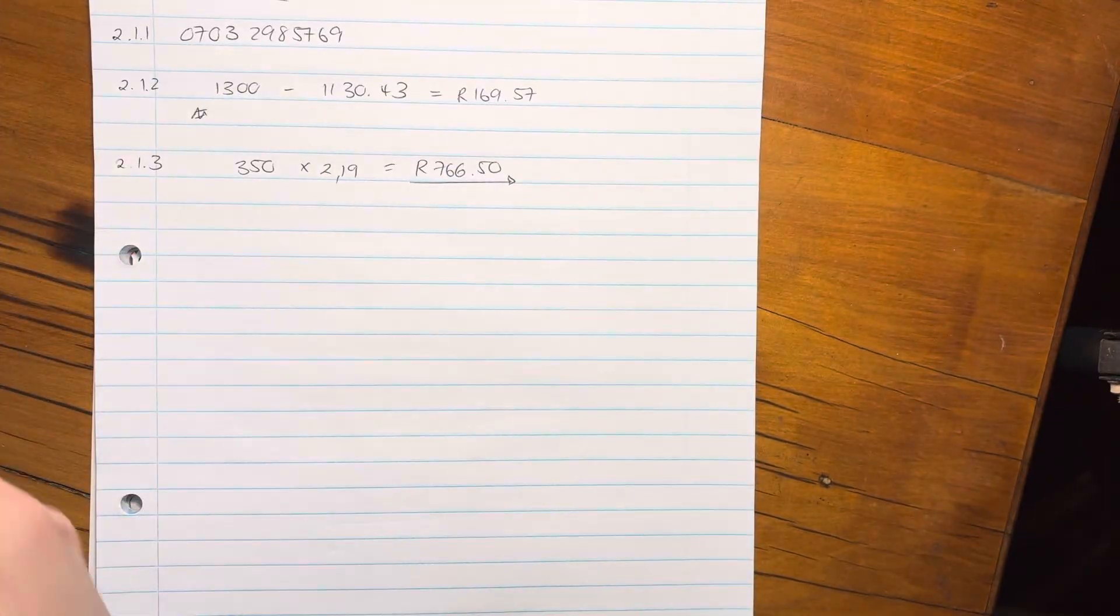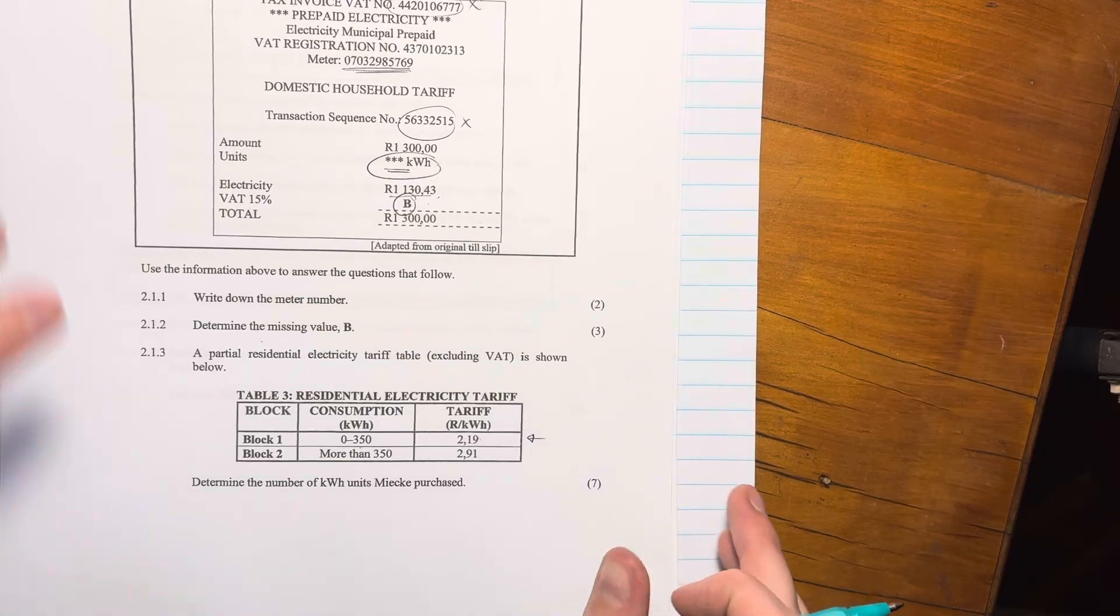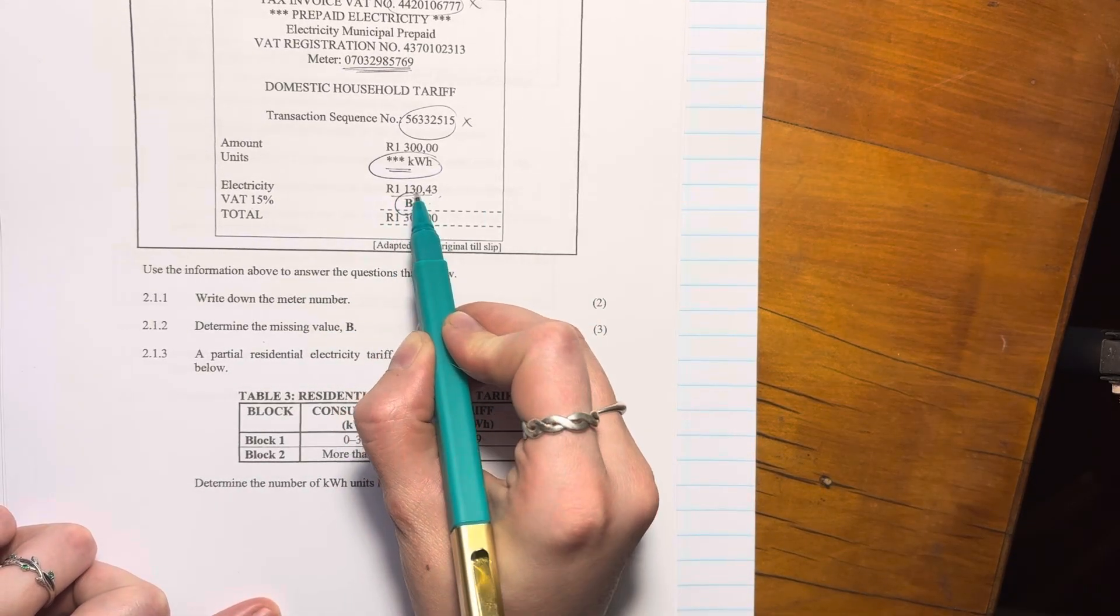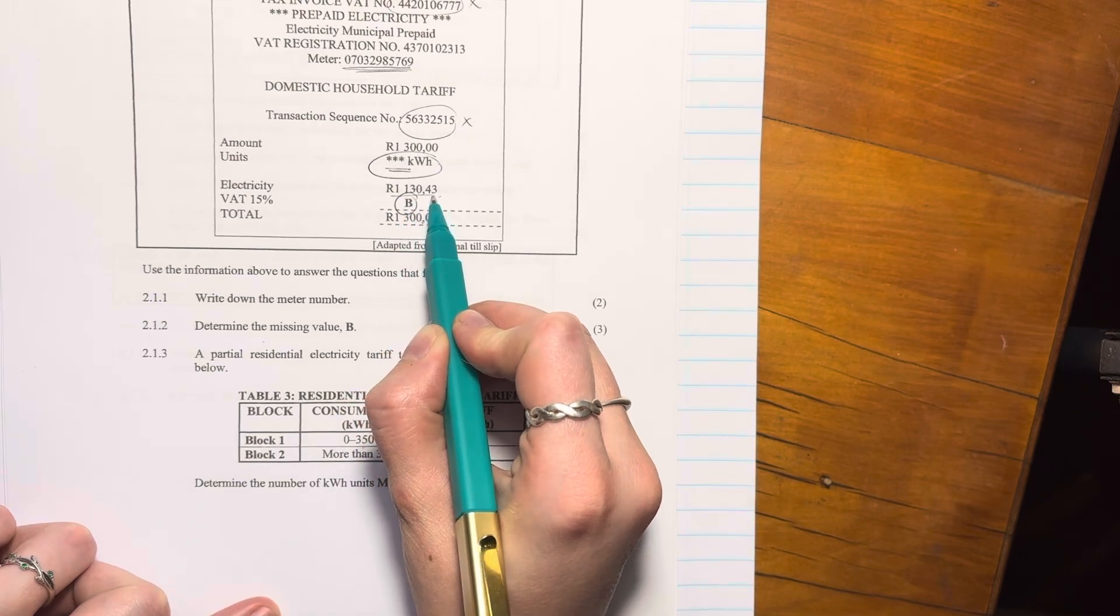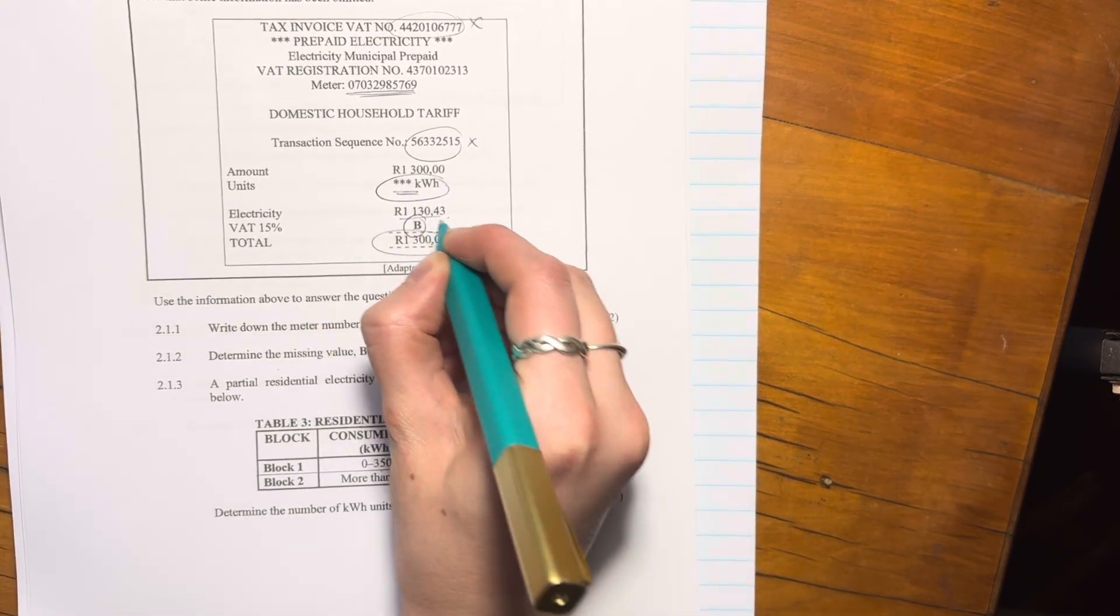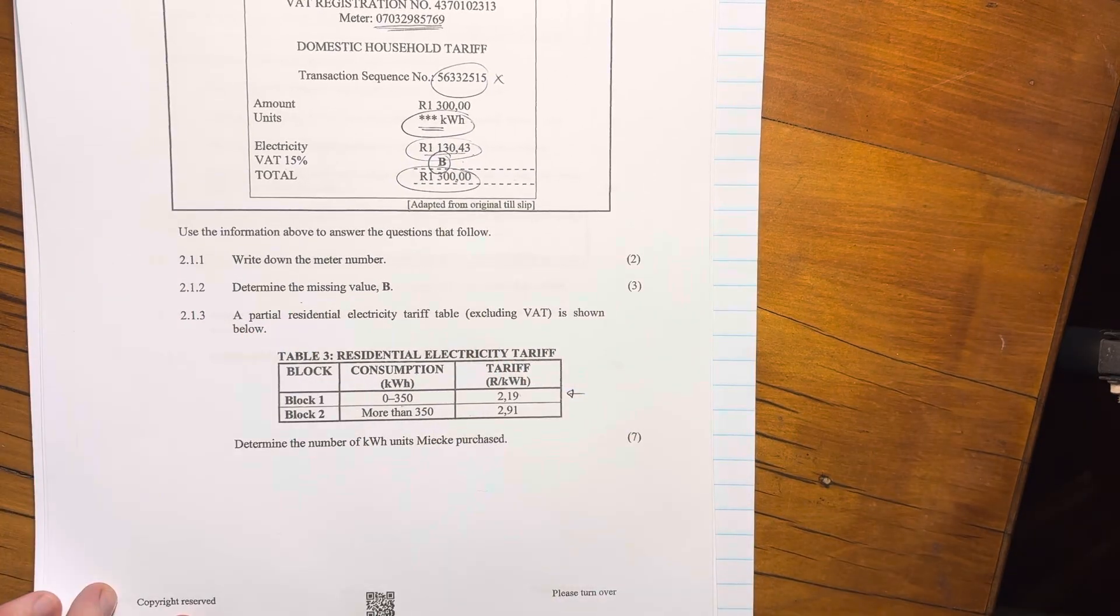Now, we know that she paid more than that. Right. So we know that she paid 1,130.43. And that's for electricity. So be careful here. Don't use this amount here. Use that amount there because it's for the electricity. Right.